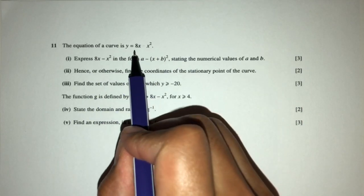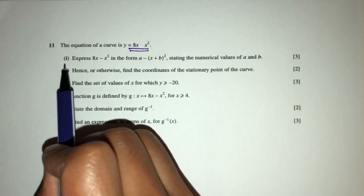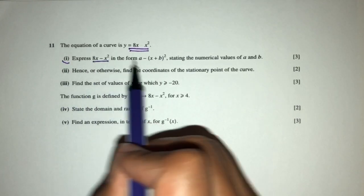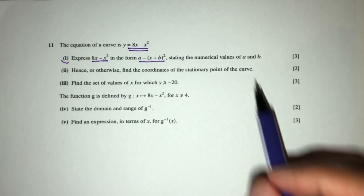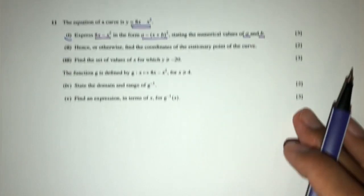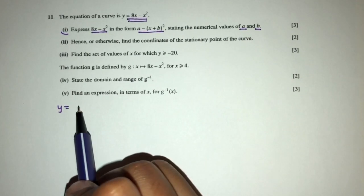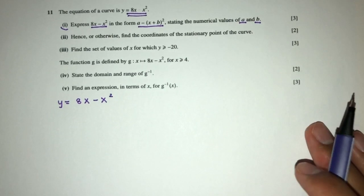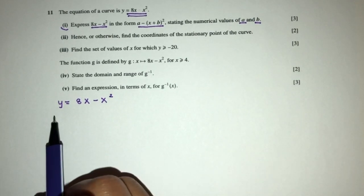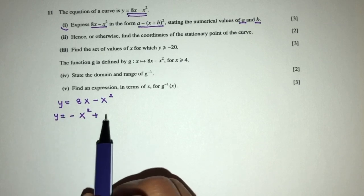The equation of a curve is given by y = 8x - x². Part one asks us to express this equation in a specific form, finding the values of a and b. First, we rewrite this as minus x squared plus 8x.